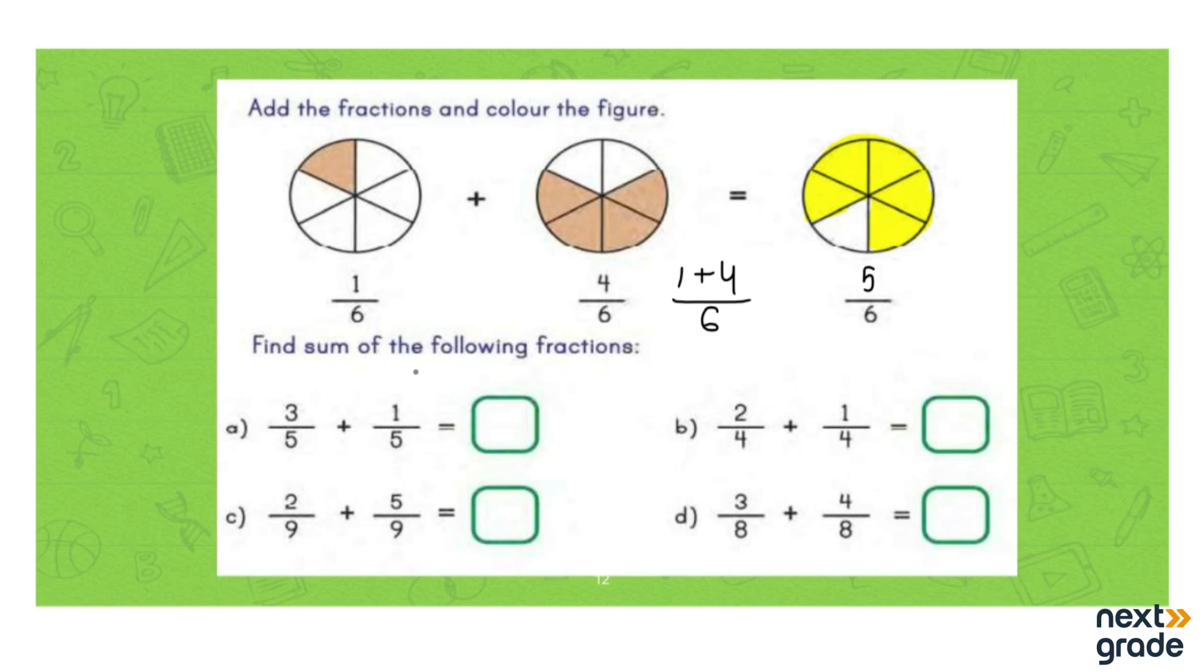Find the sum of the following fractions. We'll write on the side - that is 3 + 1 with the same denominator 5. So 3 + 1 is 4, so the answer is going to be 4/5.